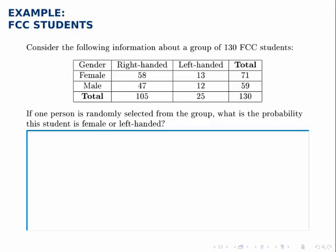Here we're given this contingency table, or two-way table, that contains information about 130 FCC students broken down by gender and by whether they're right-handed or left-handed.